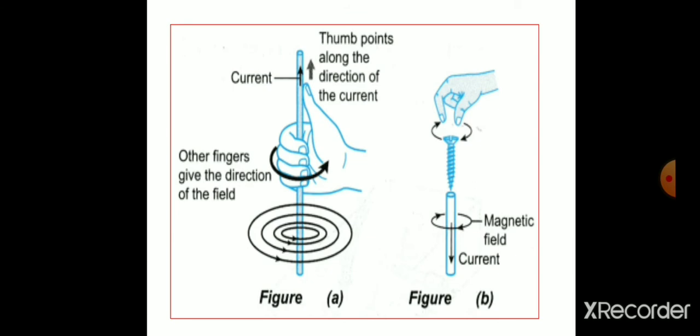You might have already studied how to calculate the direction of magnetic field and current. Suppose, if you have got a current carrying conductor and if you are holding it in your right hand with your thumb pointing in the direction of current, then the direction in which the other fingers curl will give you the direction of magnetic field, as you can see from the figure.